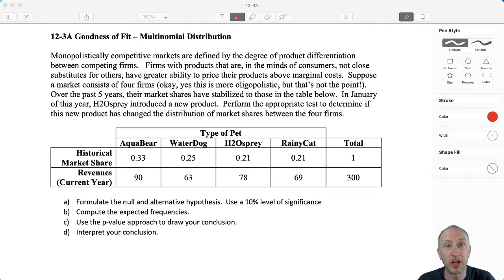Monopolistically competitive markets are defined by the degree of product differentiation between competing firms. Firms with products that are in the minds of consumers not close substitutes have greater ability to price their products above marginal costs. Suppose a market consists of four firms. Now of course, yes, four firms. The economists that are watching this, yeah, it's a little bit more oligopolistic, but that's beside the point.